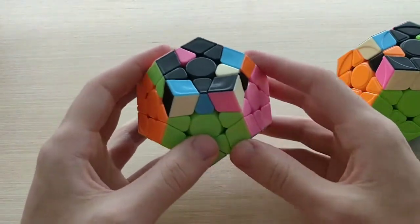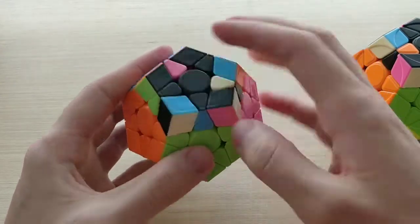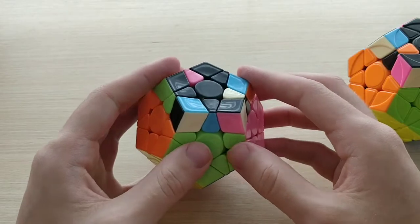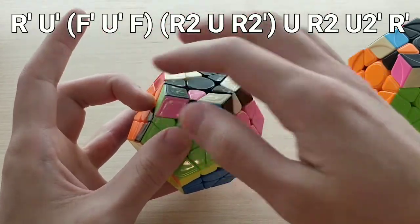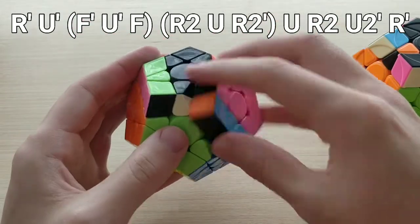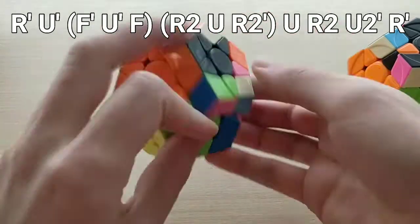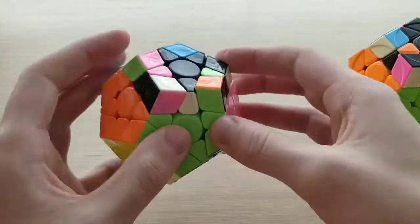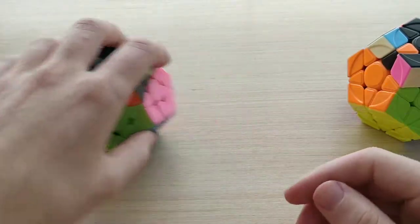And then finally we have the 11A cases. 11A plus here, we do from this angle, with the oriented pieces in the back left, and the algorithm looks like this. R' U', F' U', with our middle finger, F, and then R2 U, R2' U, R2 U2' R'. Not quite as nice as the B cases were, but still good enough.